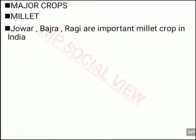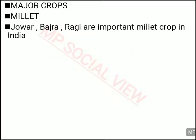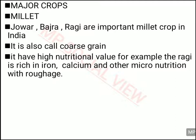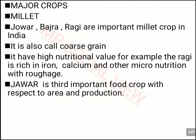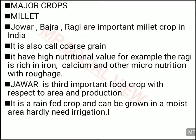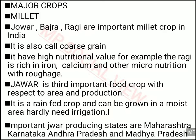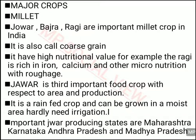Now we are going to discuss the third major crop of India — millets. Under millets, you have crops like Jowar, Bajra and Ragi. These are called coarse grains and have a lot of nutritional value. For example, Ragi is rich in iron, calcium and micronutrients, and also rich in roughage — it is good for health. In terms of area under cultivation, Jowar comes third in India after rice and wheat. It is a rain-fed crop and does not require much water. Important Jowar-producing states are Maharashtra, Karnataka, Andhra Pradesh and Madhya Pradesh.